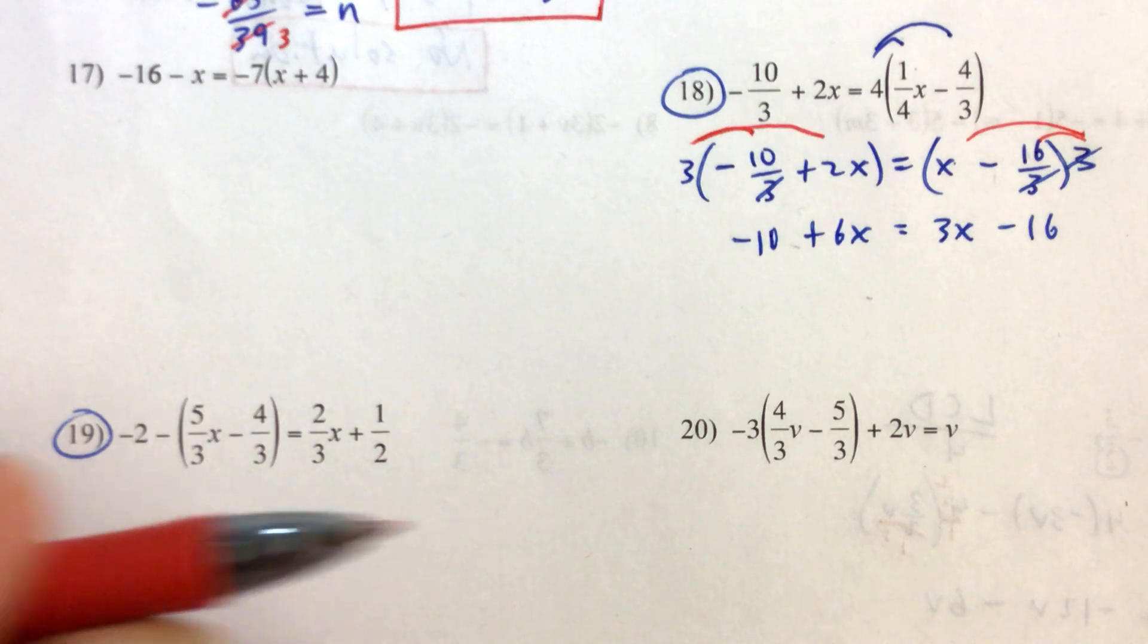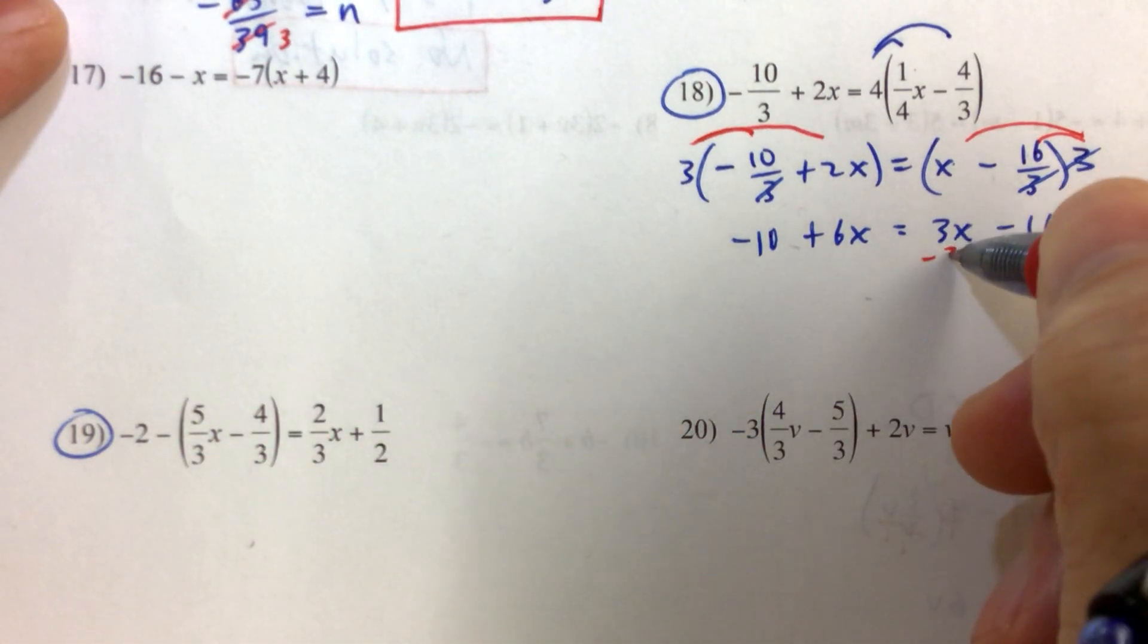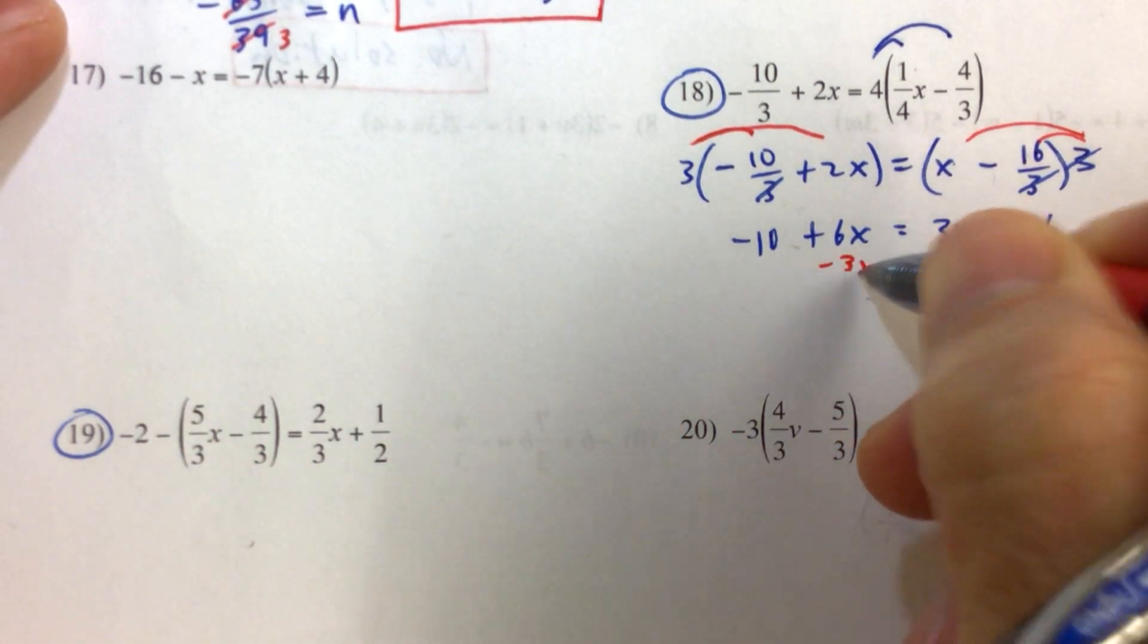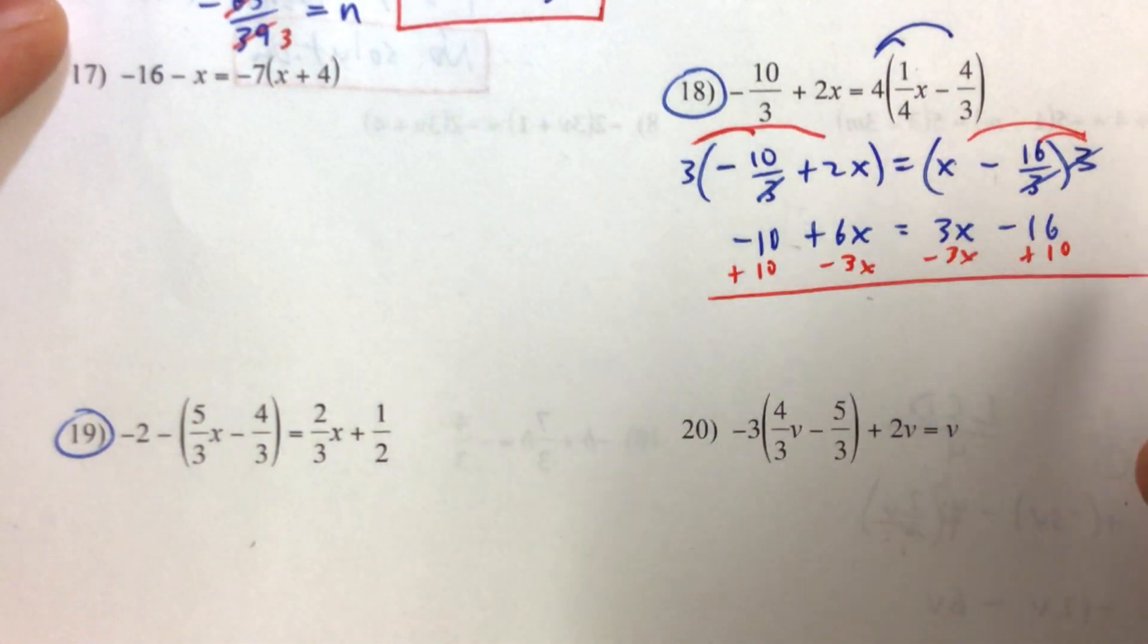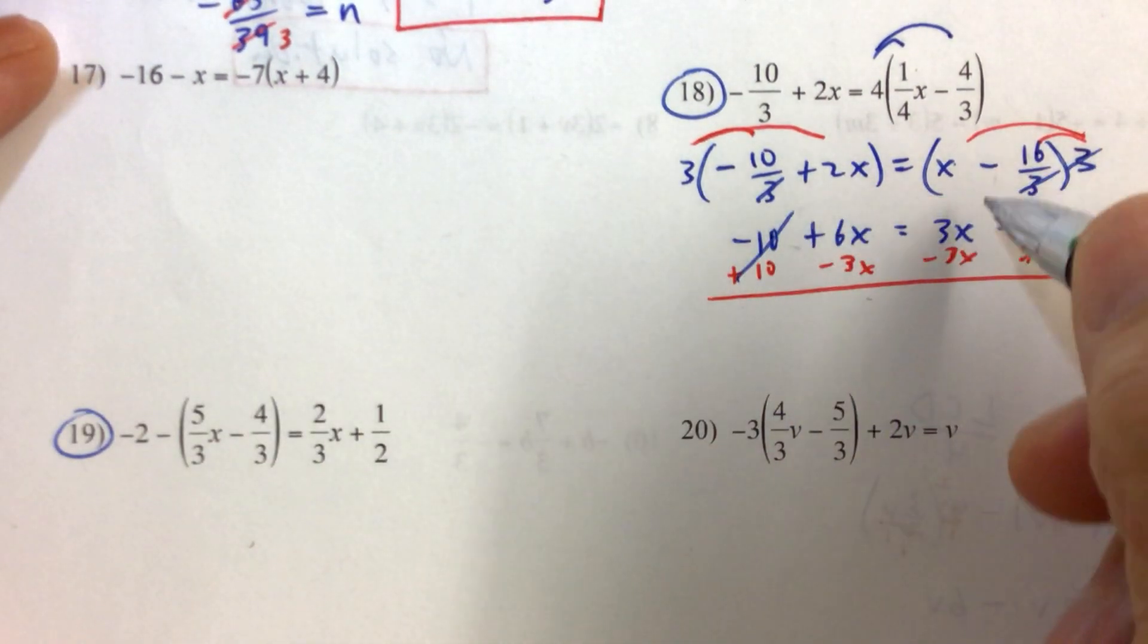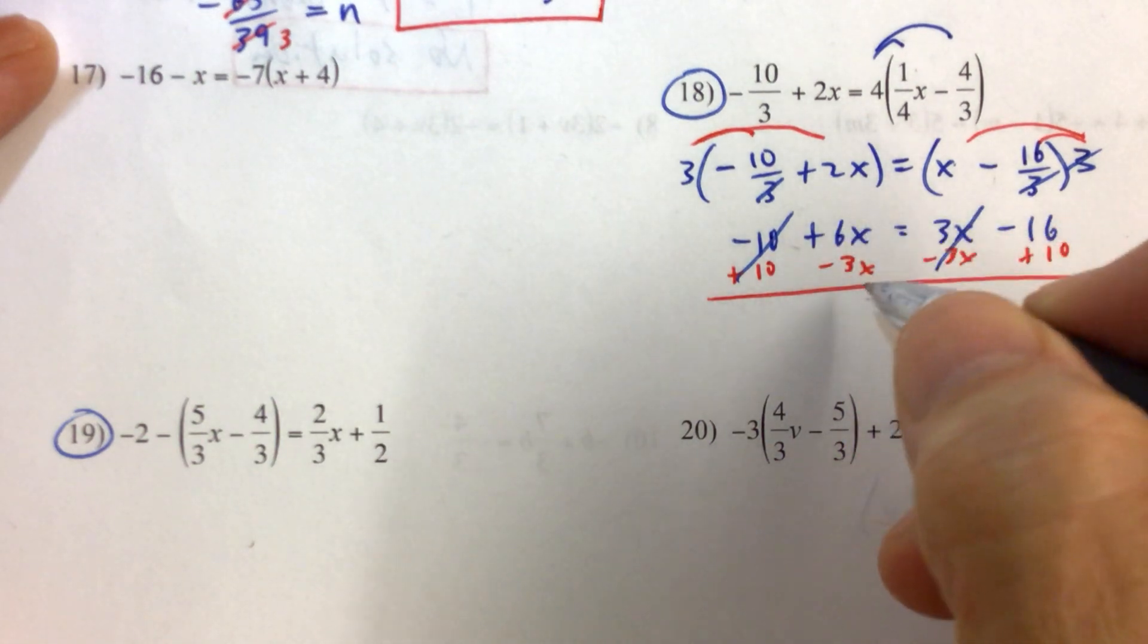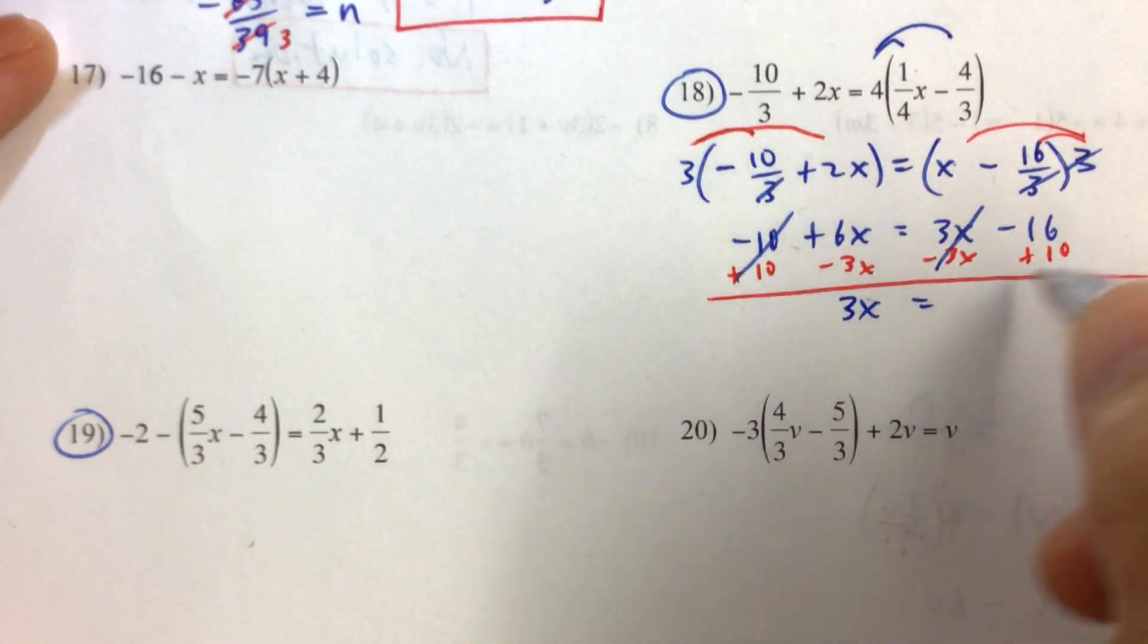And then we'll move the variable terms to the left-hand side by subtracting 3x from both sides. We'll also add 10 to both sides. And when we do that, those cancel. 6x minus 3x is 3x, negative 16 and positive 10 is negative 6. So dividing both sides by 3, we get x equals negative 2.